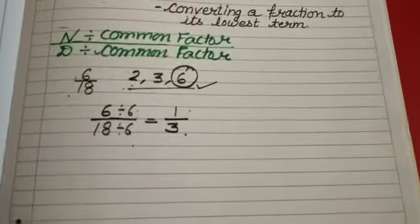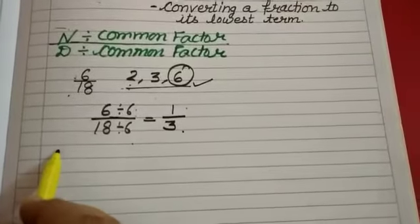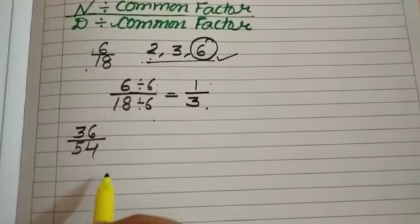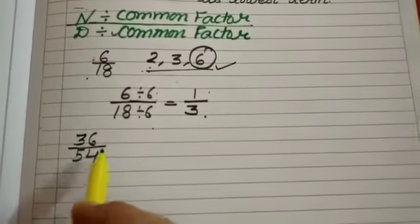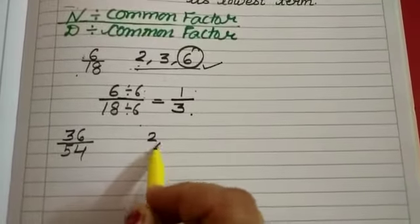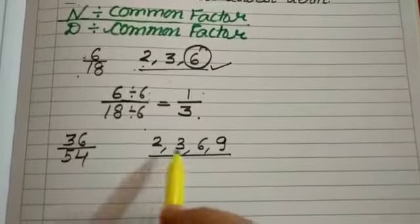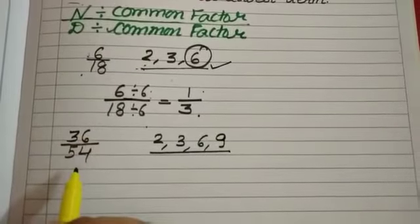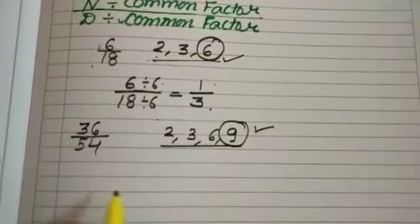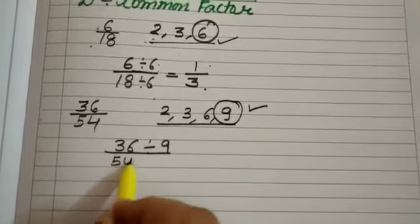Now I am taking one more example: 36 by 54. Here again we have to look at the numbers by which we can divide both the numerator and denominator. So let's take 2, 3, 6, and 9. These are the numbers by which we can divide both numerator and denominator. Among these numbers, I will take the biggest number, that is 9. So let's divide the numerator by 9 and the denominator also by 9.